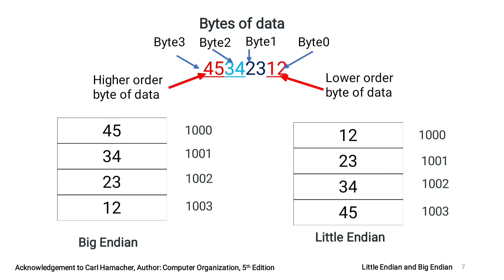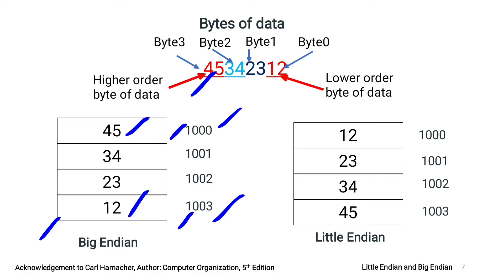With respect to memory, how are these 4 bytes stored? Byte 12 is the lower order or least significant byte of the data, and byte 45 is the higher order or most significant byte. Looking at the first figure with 4 memory locations at addresses 1000 to 1003: byte 45, the higher order byte, is stored at the lower order address 1000, and the lower order byte is stored at the higher order address. This ordering is called Big Endian.